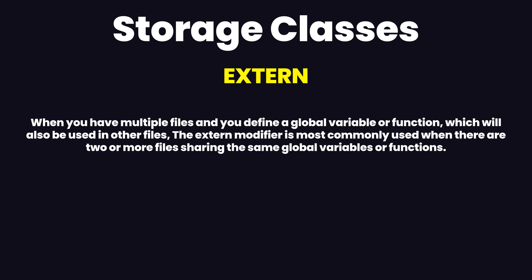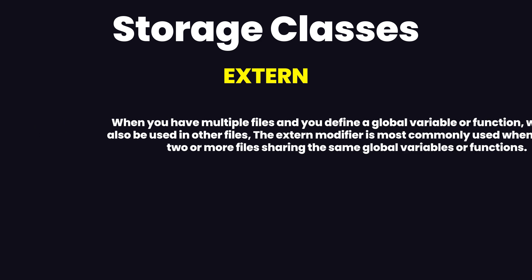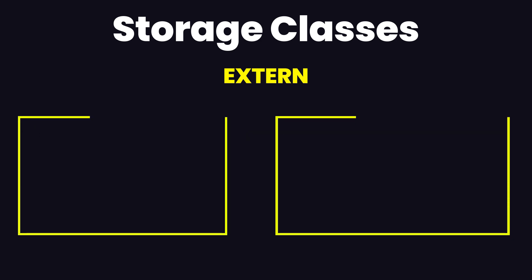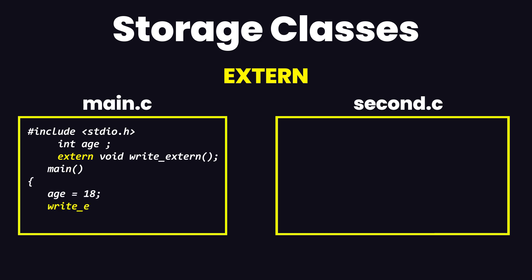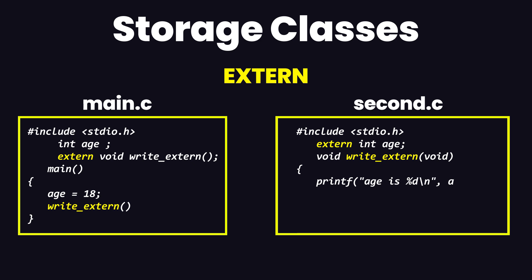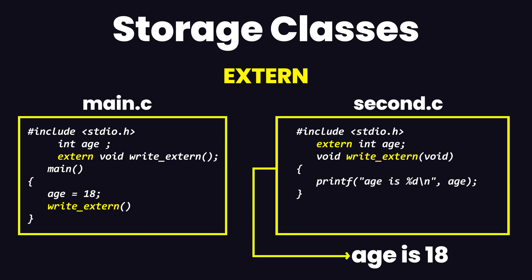The extern storage class is most commonly used when there are two or more files sharing the same global variables or functions. For example, in a main file you declare 'int age' and within the main function you assign it a value of 18, then use a function 'write_extern'. In the second file, you can include that variable by using 'extern int age', and if you print out the value it will be 18, which was declared in the main file.